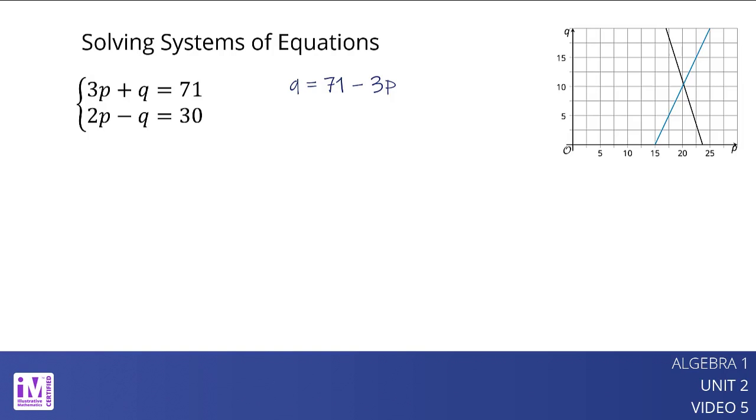Now we can substitute the expression 71 minus 3p in the place of q in the second equation. Doing this gives us an equation with only one variable, 2p minus the quantity 71 minus 3p equals 30, and makes it possible to find p.